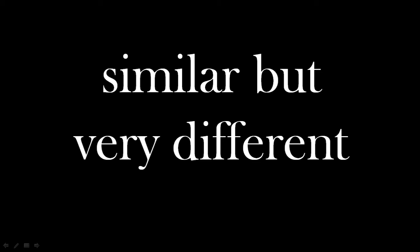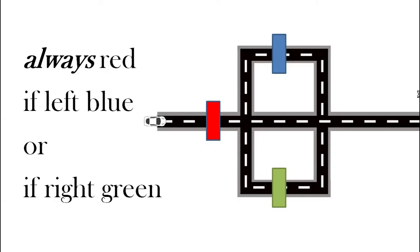The next four examples look similar but they are very different. Here we can see the car and it's going to go through some colored blocks.